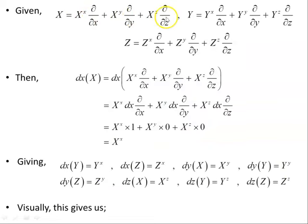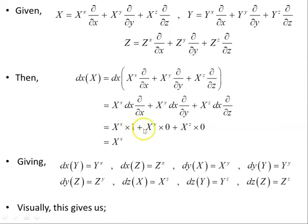Given vector x written in terms of the basis vectors partial/partial x, y, z, then dx — the one-form dx acting on vector x — we multiply the one-form dx across each component. dx acting on partial/partial x equals one by Kronecker delta. dx acting in the y or z direction equals zero by Kronecker delta, since they're perpendicular. So we get the x component of the x vector. That's what the one-form dx acting on vector x extracts for us.